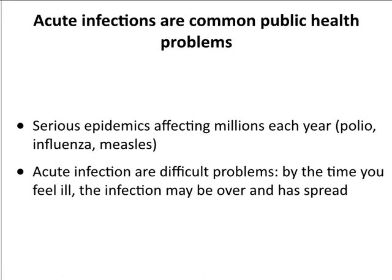Inapparent infection is one of the reasons why acute infections are big problems. Influenza, measles, and other respiratory viral infections are problems for epidemiologists because they spread very quickly — you have a large population of infected individuals spreading virus and no one knows it. By the time you feel ill, the infection may be over. In an apparent infection, you never feel ill and you're spreading the infection. Many acute infections, when they do become symptomatic, it's usually a few days after virus shedding has already taken place. In closed situations, this leads to rapid virus spread, and that's why these viruses often cause big epidemics every year.